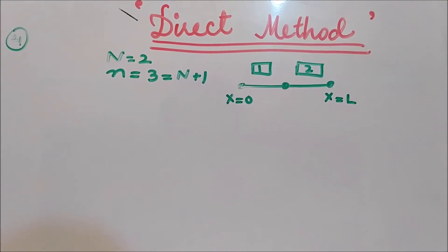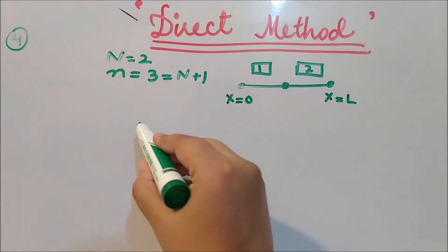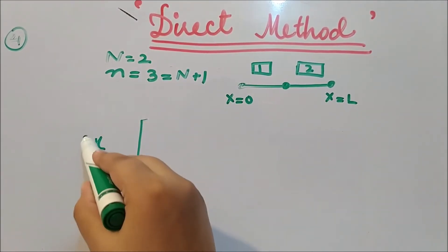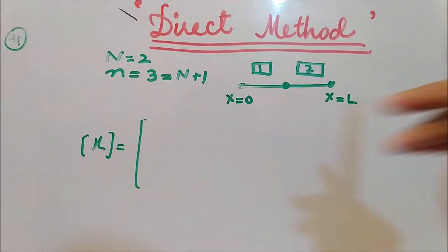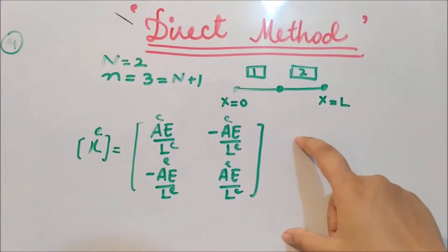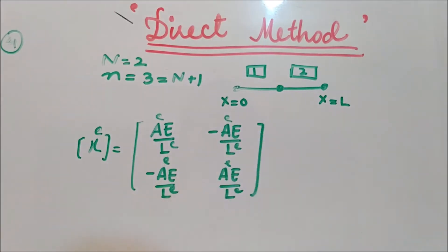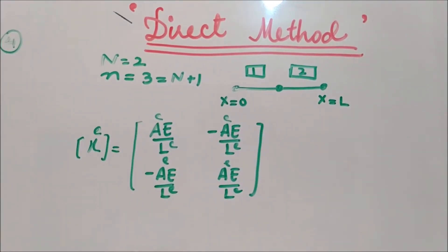In the last step we derived the stiffness matrix of an element, represented by k. This stiffness matrix is for a linear element having two nodes.